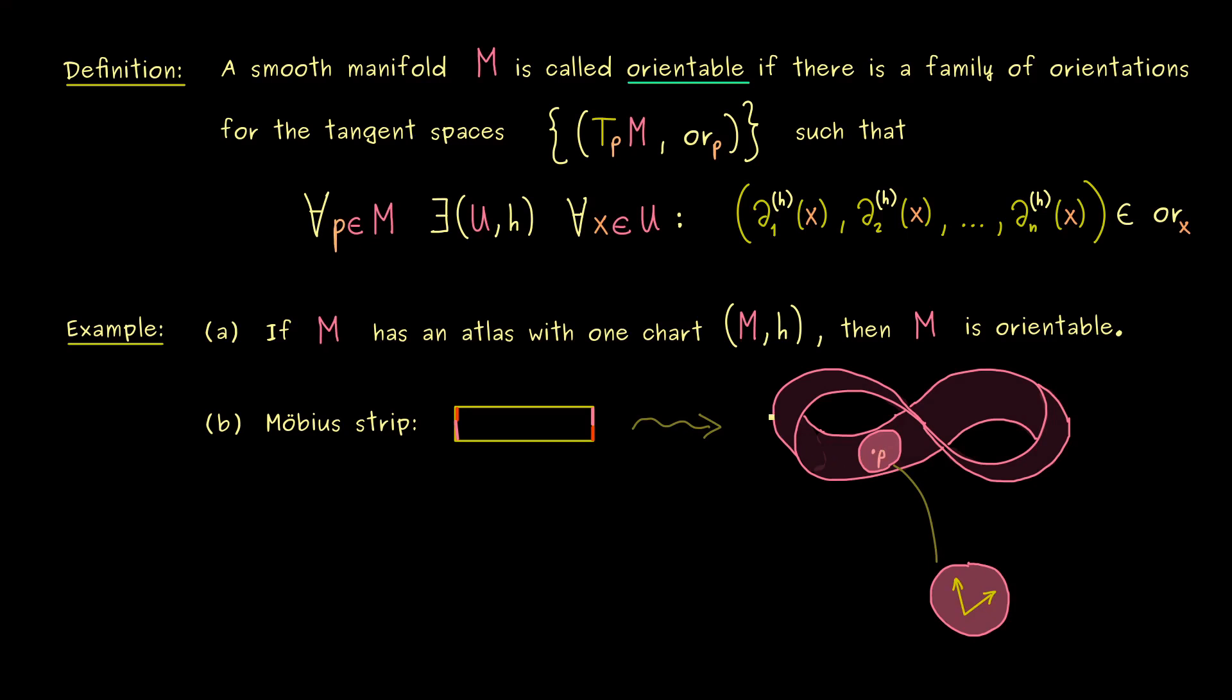However, then we want to run around the Möbius strip, and then somehow we are on the other side. This means we are again in the neighborhood of P, but now the vectors show in different directions. So if we took the vectors with us, then now the orientation here is flipped.